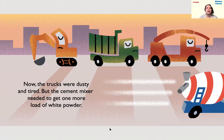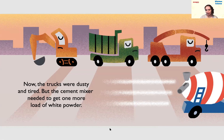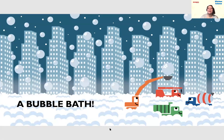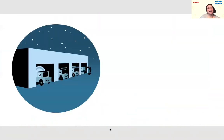Now the trucks were dusty and tired, but the cement mixer needed one more load of white powder. What do you think he's going to mix this time? The cement mixer mixed up a white powder, added a little water — and the sign spells S-O-A-P. Soap! A bubble bath! He made a bubble bath to clean all the dusty, tired trucks. Do they look happy now? They certainly do, and now they can go to sleep.